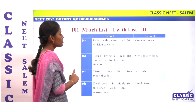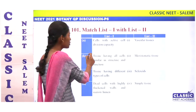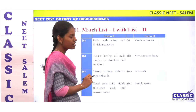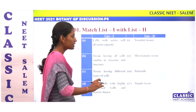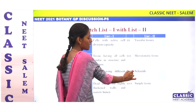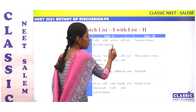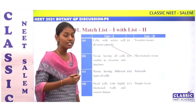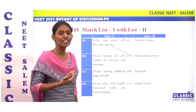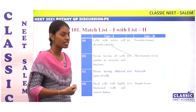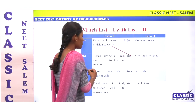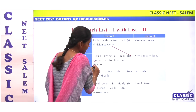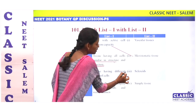The first question is match the column. What are cells with active cell division capacity? Meristematic tissue is actively dividing — parenchymatous tissues with active division are called meristematic. So answer 1 is matched with 2. Tissues having all cells similar in structure and function are called simple tissue.